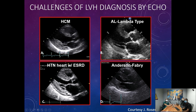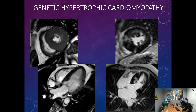People with uncontrolled high blood pressure or end-stage renal disease will also have thick heart muscle, so the most common cause of left ventricular hypertrophy is actually hypertension. There's another cause — Anderson-Fabry disease, another genetic storage disease that can also produce thickened heart muscle.